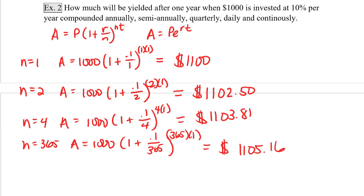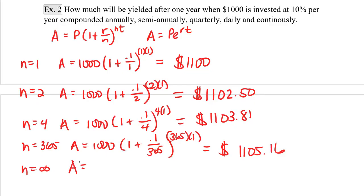And then finally we're going to do continuously, where it basically means that n is equal to infinity. So now we'll be using the formula A equals Pe to the rt. So A will equal 1,000e to our rate, which is 0.1, times our time, which is 1 year. And we'll put this in our calculator. Now e is a special number just like pi, so you should be able to find e and e to the x on your calculator. And once we plug this in, we get $1,105.17.